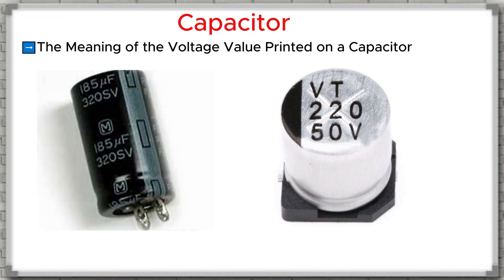The meaning of the voltage value printed on a capacitor: We can see that on any capacitor, the voltage rating is always printed right after the capacitance value. This is the maximum voltage that the capacitor can withstand. If this voltage is exceeded, the capacitor may explode. When installing a capacitor into a circuit with a voltage U, it is always recommended to use a capacitor with a maximum voltage rating about 1.4 times higher. For example, in a 12-volt circuit, we should use a capacitor rated at 16 volts. In a 24-volt circuit, we should use a capacitor rated at 35 volts, and so on.